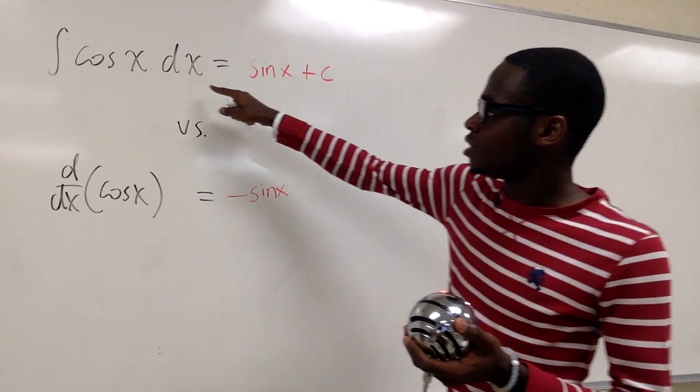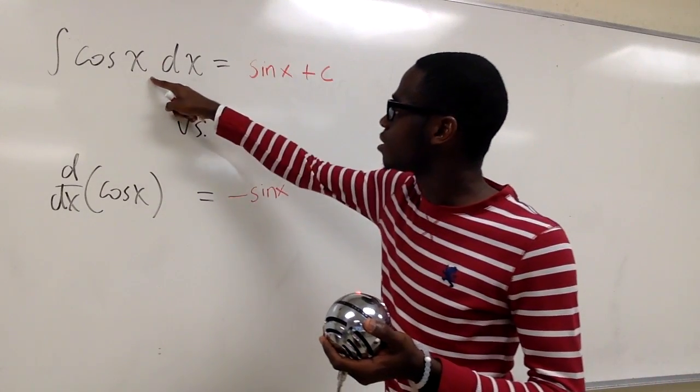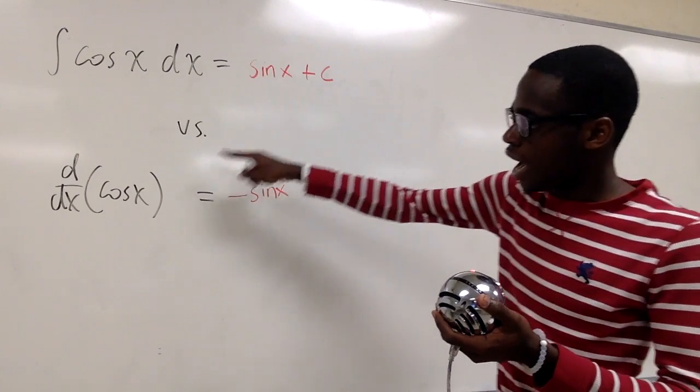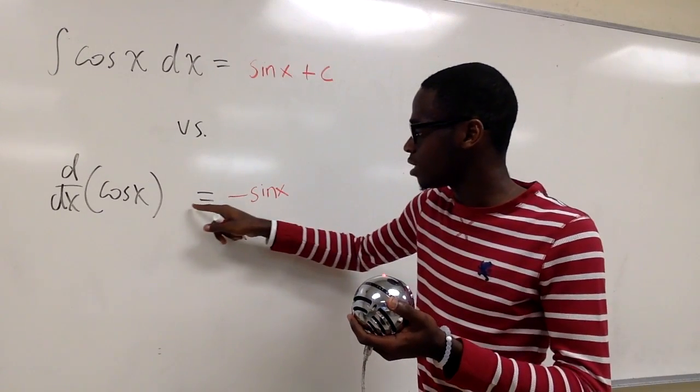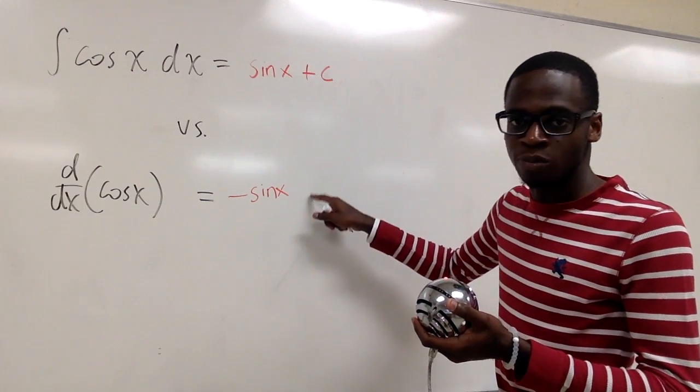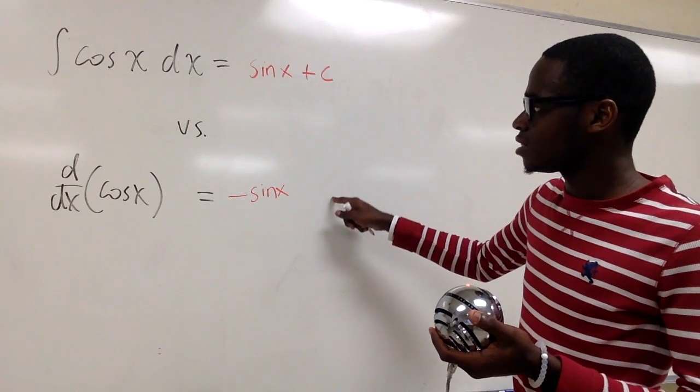So I'll repeat it. The integral of cosine x is positive sine x plus c, and the derivative of cosine x is negative sine x. And there's no plus c. And that's it.